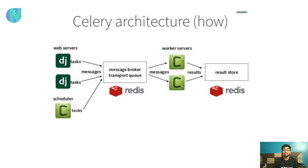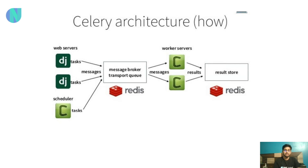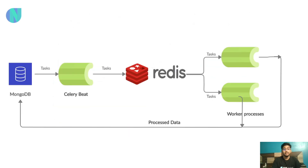We can execute tasks periodically as background tasks that continuously run, and as they execute, messages or mails are fired — whatever actions we need. These things will be covered in this playlist. Celery Beat is very important for periodic scheduling.